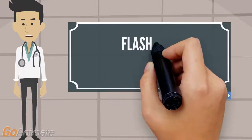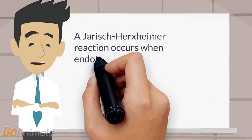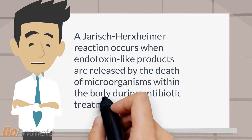What is a Jarisch-Herxheimer reaction and is it associated with Lyme disease? A Jarisch-Herxheimer reaction occurs when endotoxin-like products are released by the death of microorganisms within the body during antibiotic treatment. Approximately 15% of patients treated for Lyme disease experience a Jarisch-Herxheimer-like reaction during the first 24 hours of therapy.